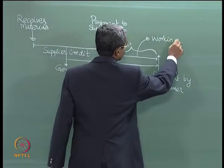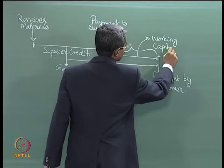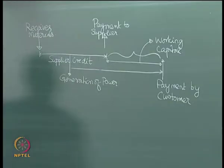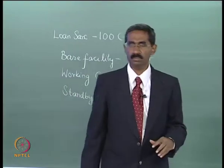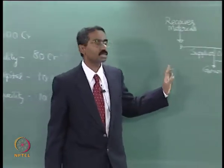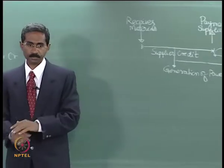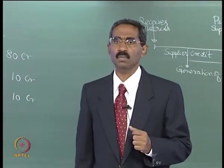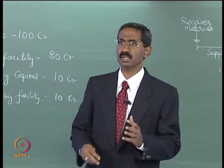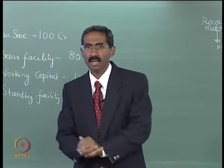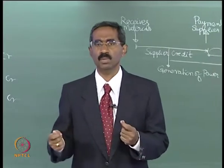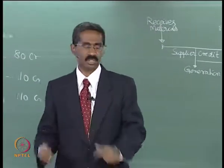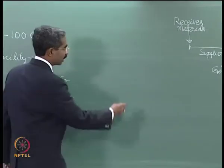Usually this gap is bridged by using the working capital facility. It is used to meet this gap in the cash collection cycle. This cash collection cycle occurs only when the plant starts operations, and that is when the working capital loan is used. The second important feature of the working capital facility is that it is usually a revolving credit — you are given credit for a certain amount of time. The working capital facility sanctioned is, say, 10 crores.